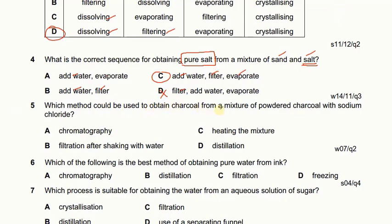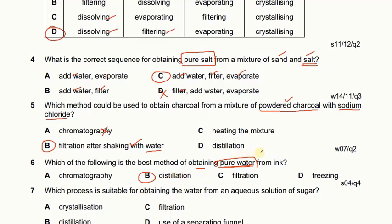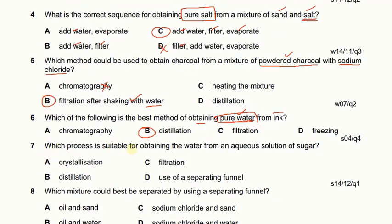To obtain charcoal from a mixture of powdered charcoal and sodium chloride: charcoal is insoluble in water and sodium chloride is water soluble. We filter after shaking with water — shaking dissolves the sodium chloride and filtering separates the charcoal. Distillation would only give water. To obtain pure water from ink, since we want the solvent from a mixture, we use distillation — the water evaporates, condenses in the condenser, and is collected. The same applies for obtaining water from an aqueous solution of sugar.